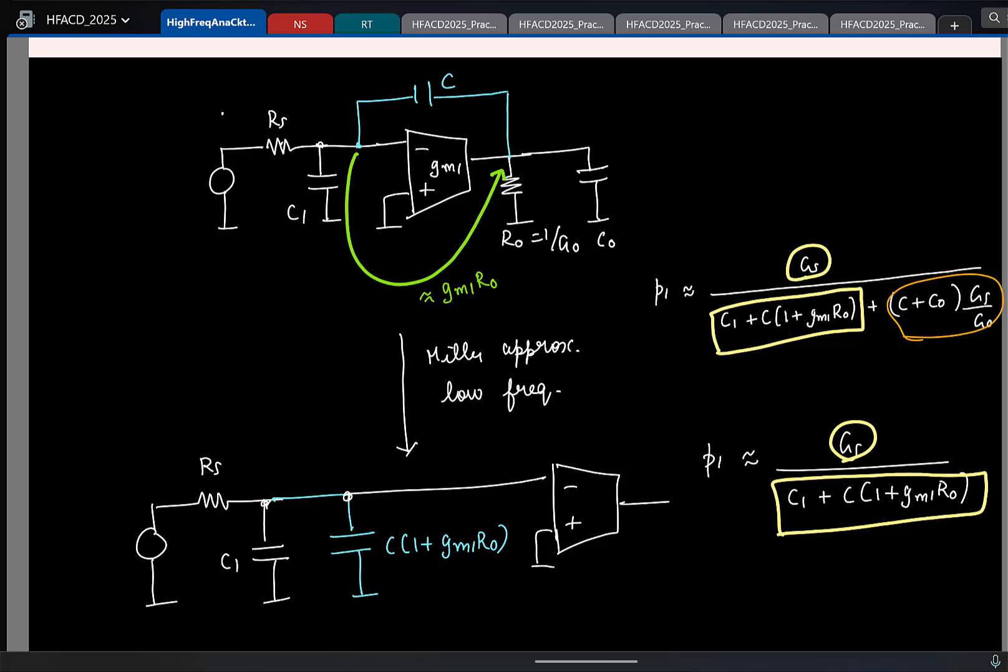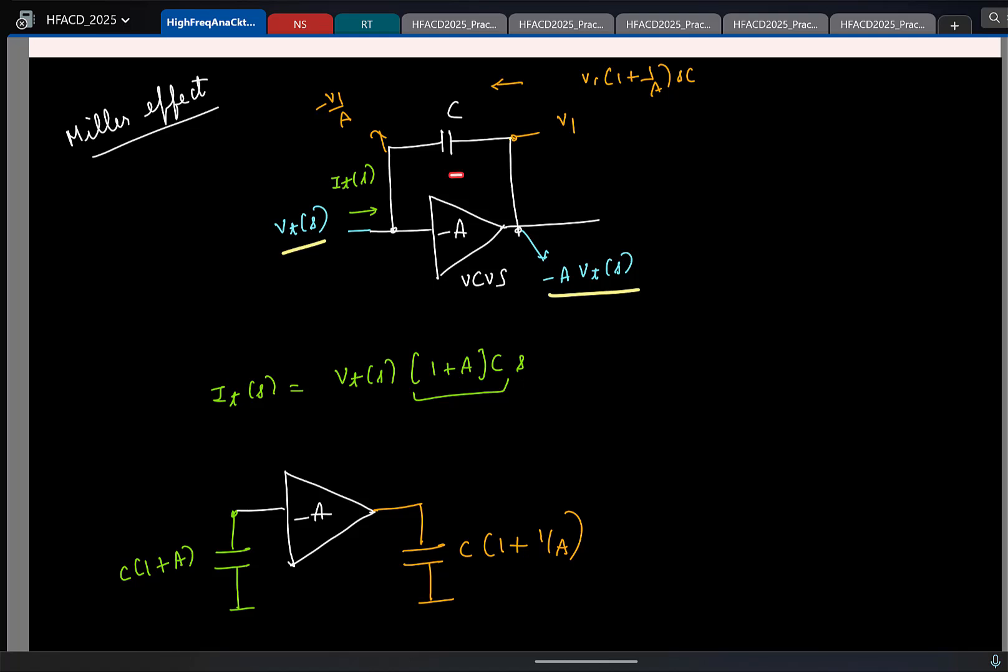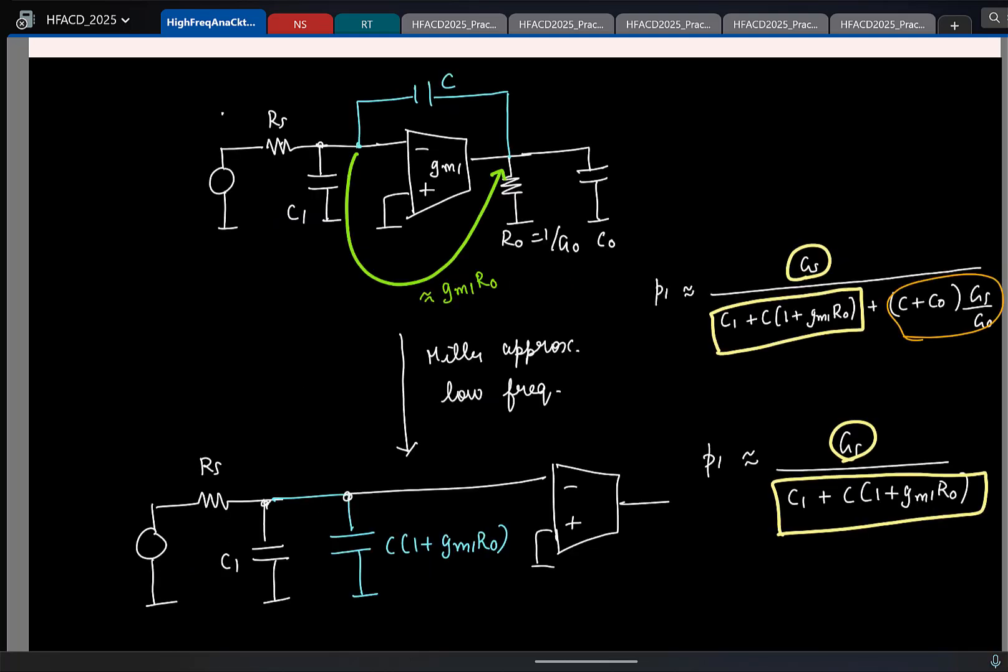But this is where a common question arises. In Miller effect we saw, if I have a capacitor C, at the input side I can refer it as C times 1 plus a. At the output side I can refer it as C times 1 plus 1 by the gain. So here I have referred at the input as C times 1 plus gm r0. So why can't I refer at the output and say that the capacitance is C times 1 plus 1 by gm r0? Is it okay to do this or do you see any issues?